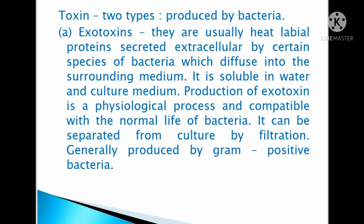There are two types of toxins produced by bacteria. The first is exotoxin — these are usually heat-labile proteins secreted extracellularly by certain species of bacteria, which diffuse into the surrounding medium. Exotoxin is soluble in water and culture medium. Production of exotoxin is a physiological process and is compatible with normal life of the bacteria.